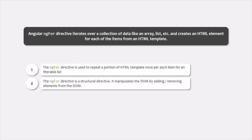This ng4 directive is a structural directive. That means it manipulates the DOM by adding or removing elements from the DOM. When we use ng4 directive, it basically iterates over a list and for each item in that list, it is going to add an HTML element in the DOM.